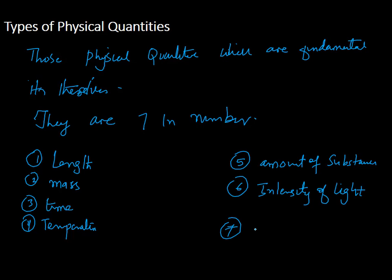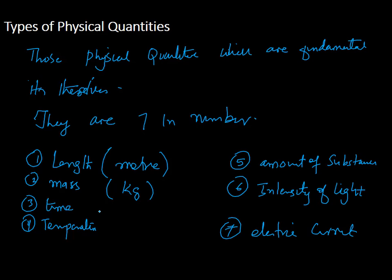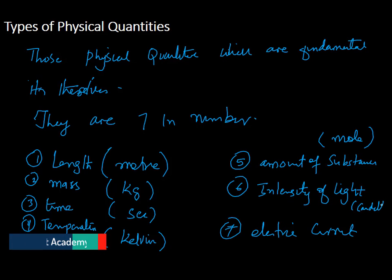The units for base quantities are: length in meters, mass in kilograms, time in seconds, temperature in Kelvin, amount of substance in moles (used in chemistry), intensity of light in candela (cd), and electric current in amperes.